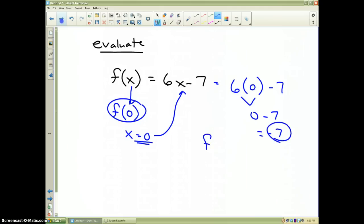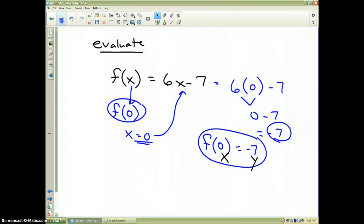So, f of 0 for this particular problem is equal to negative 7. 0 is the x value. Negative 7 would be the y value or f of x.